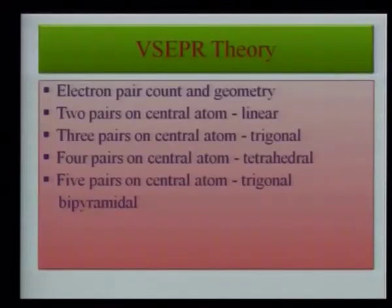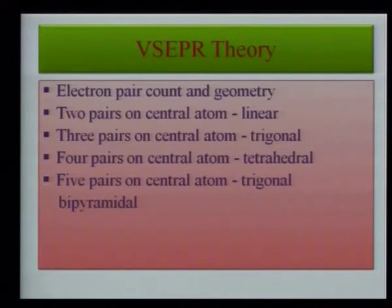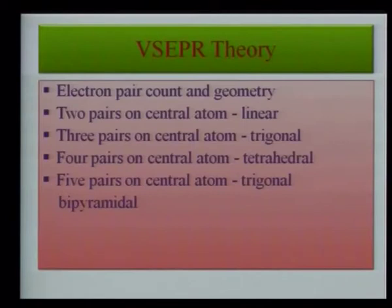Bond angles are also affected by lone pairs. In methane (regular tetrahedral) the bond angle is 109.28°. In ammonia it decreases to 107°, and in water to 104°. As the number of lone pairs increases, bond angle decreases, because lone pair–lone pair repulsion is greater than bond pair–bond pair repulsion.